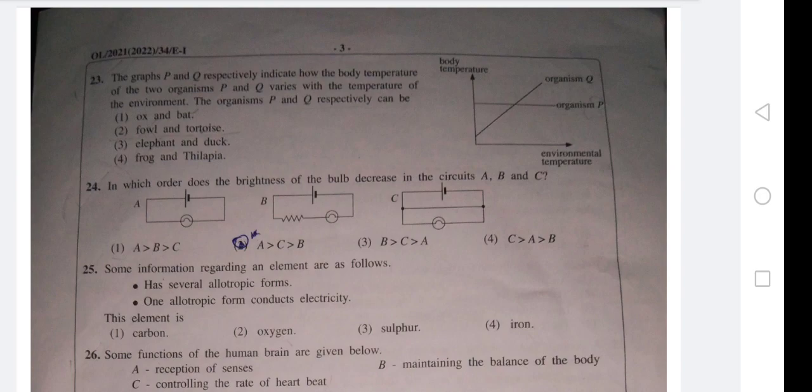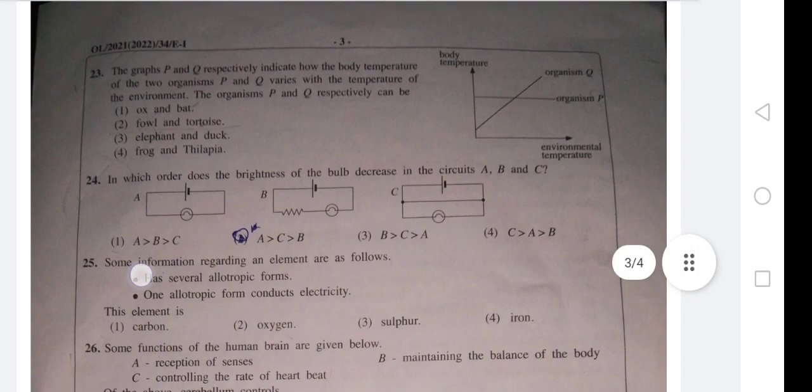But organism P is having a constant temperature even though the environment temperature is changing. That means organism P is a warm-blooded animal. So first it should be a warm-blooded animal. You can take elephant, ox, or fowl.